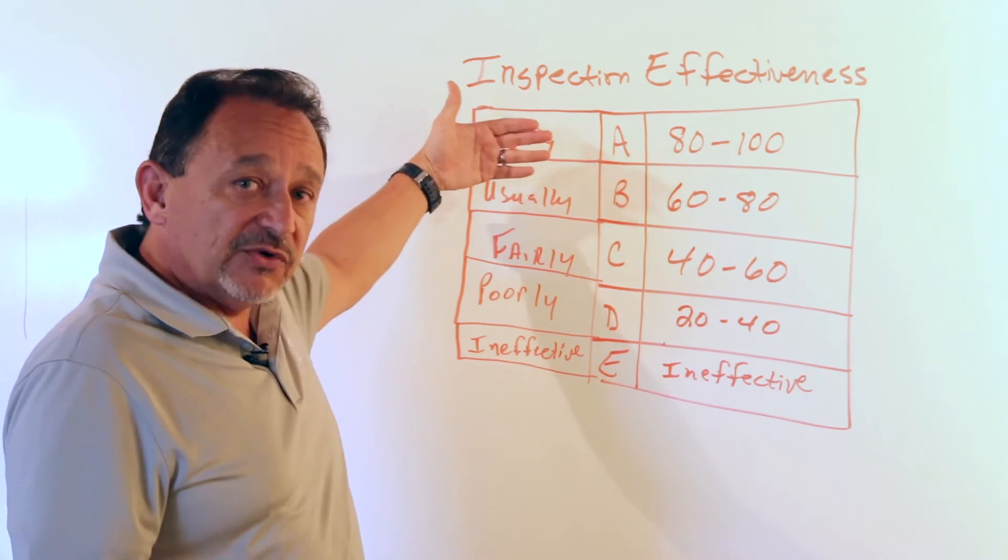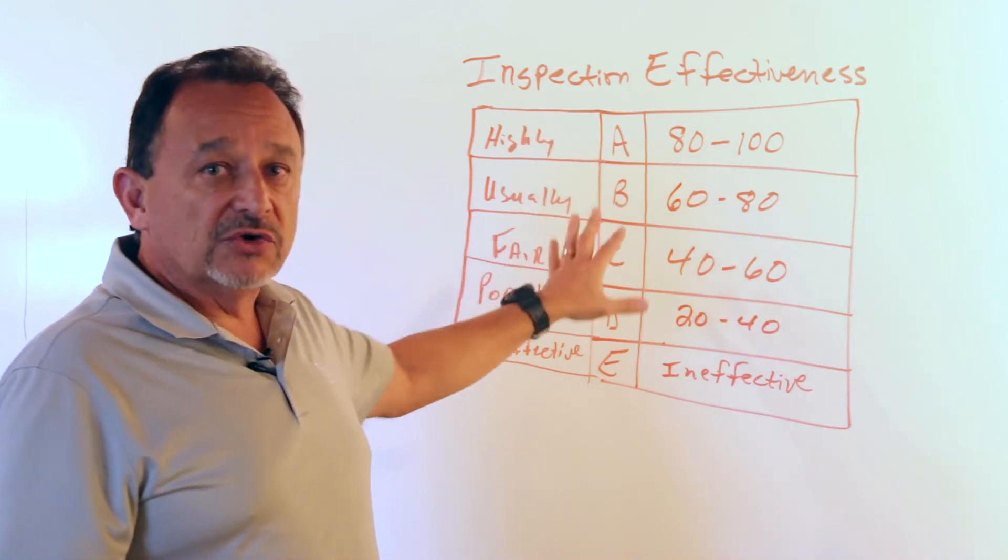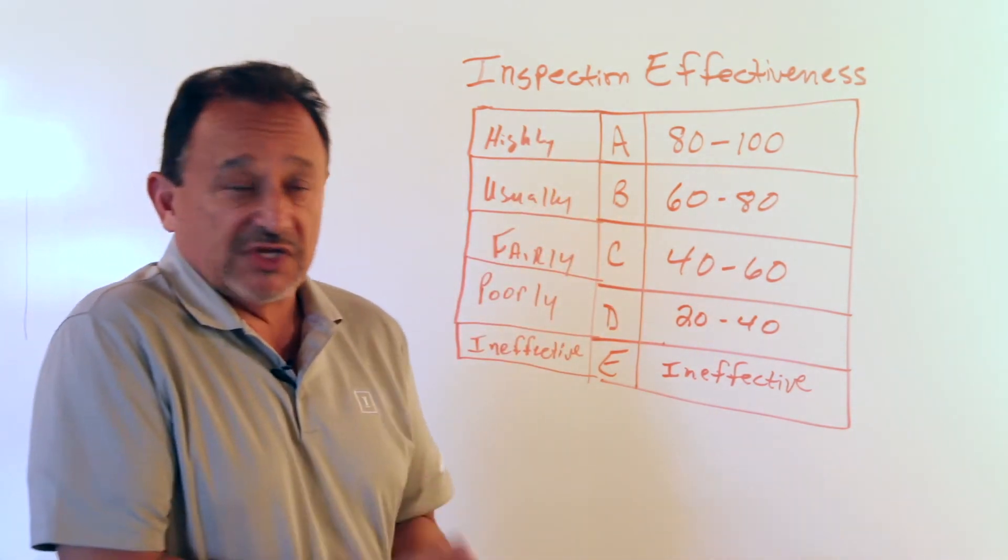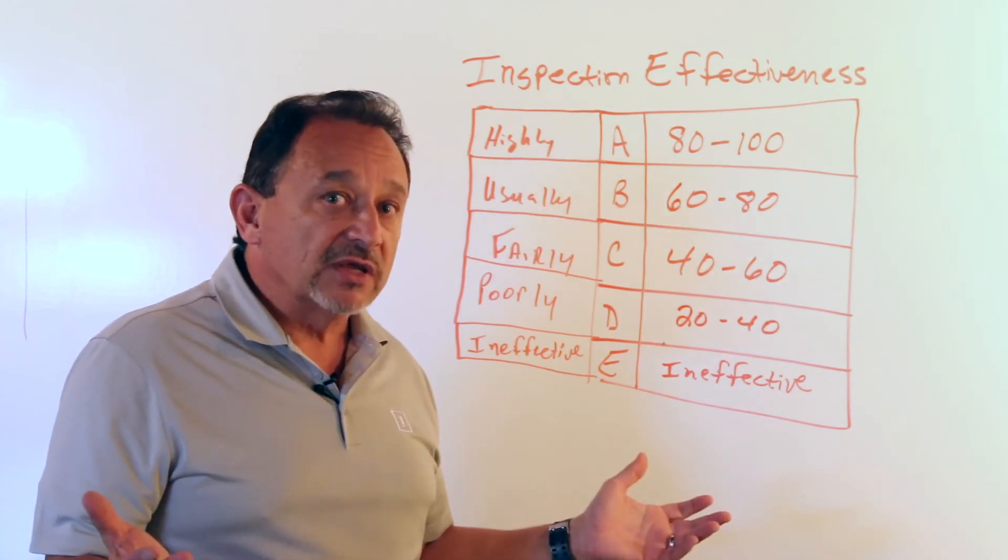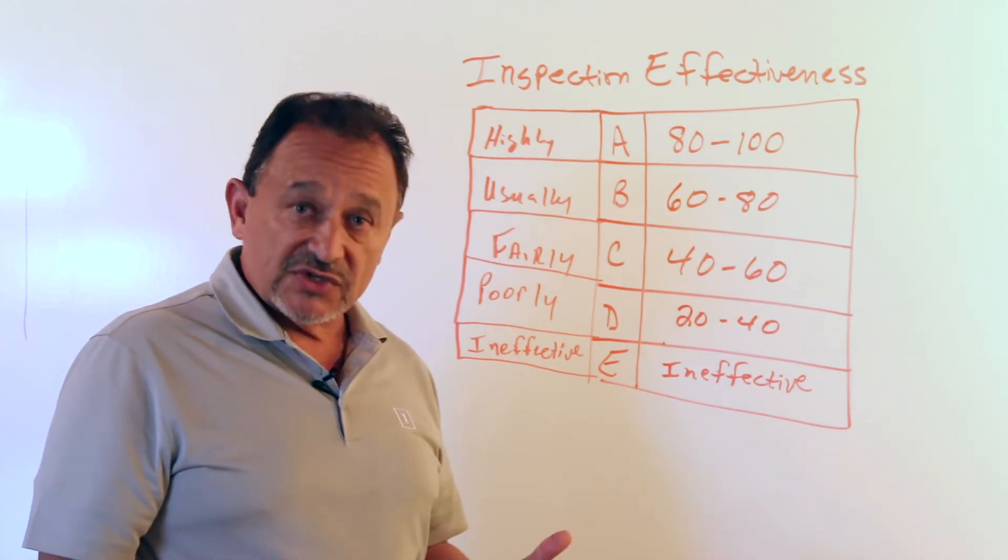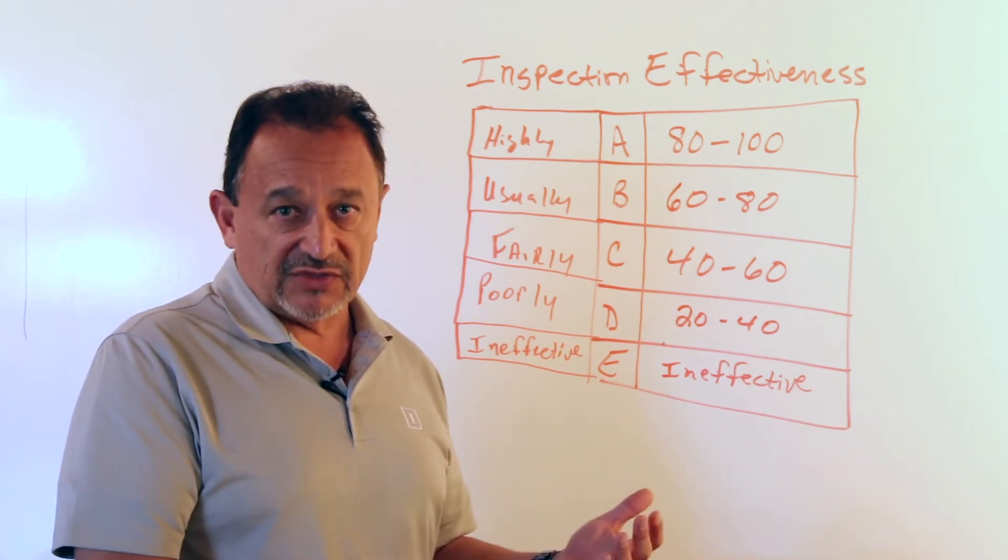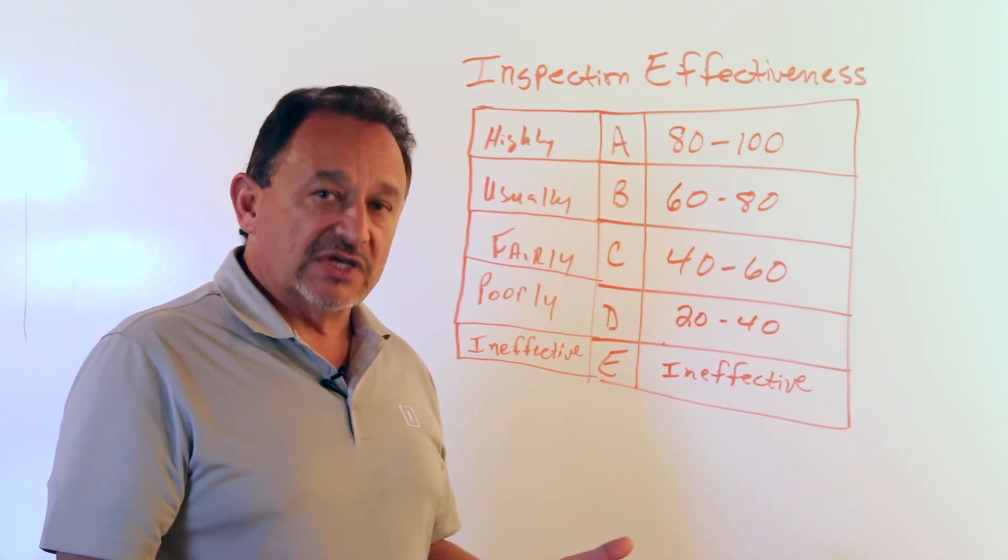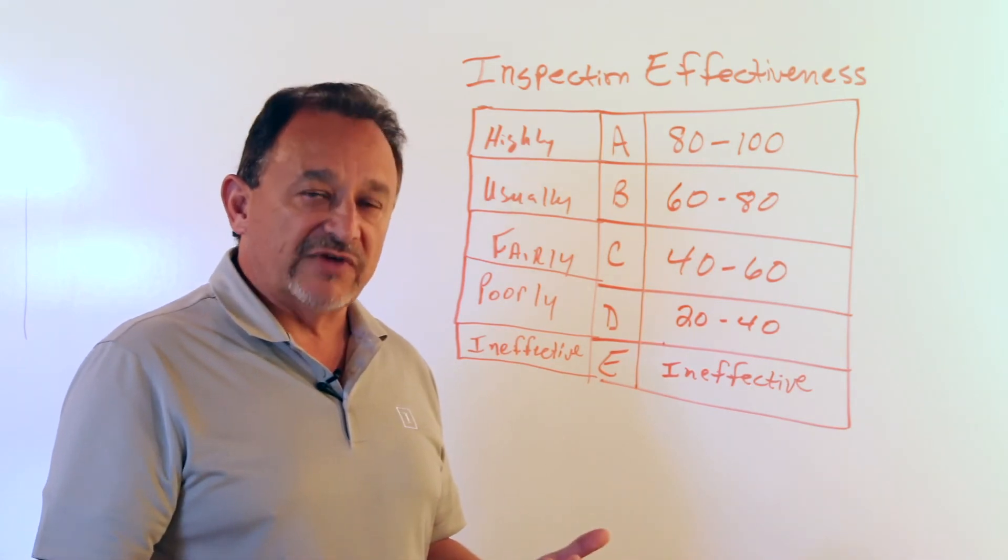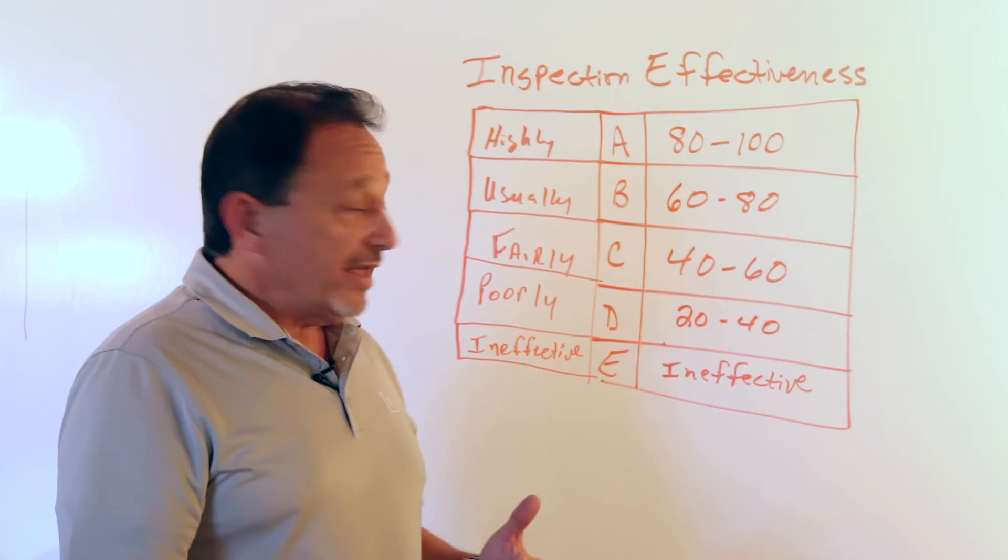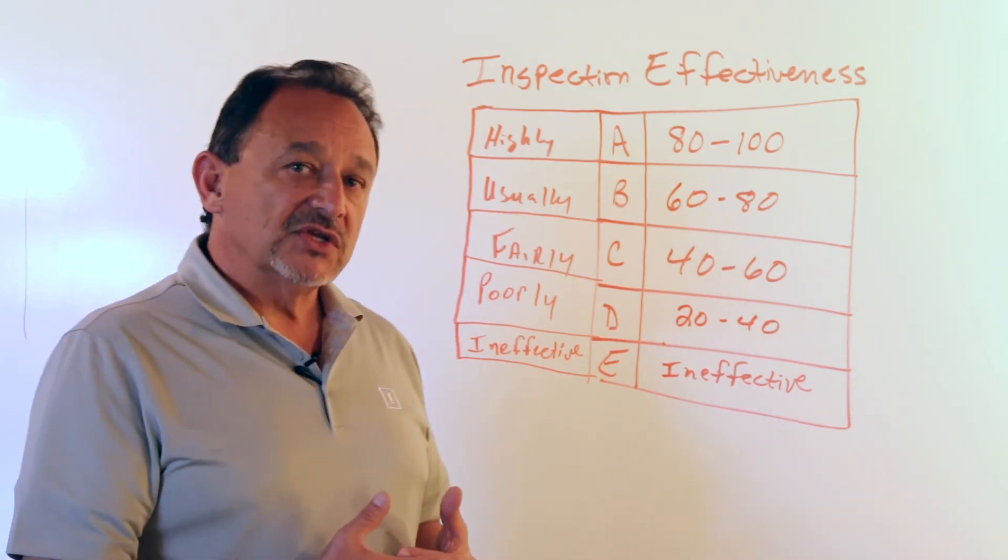So once you create your own inspection effectiveness tables, you may start with the API 581 tables as a starting point and go in and adjust those, because maybe you don't agree with certain inspection methods, maybe you're not using those methods, maybe some of those methods require a high level of expertise to do.